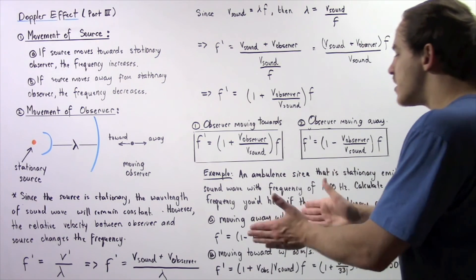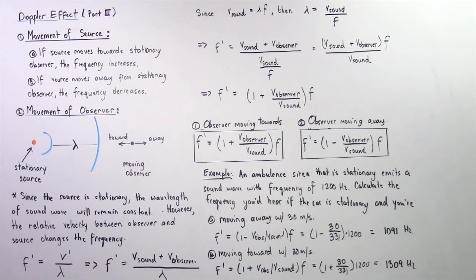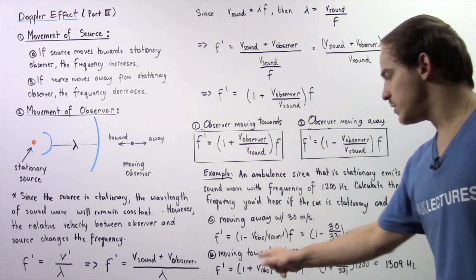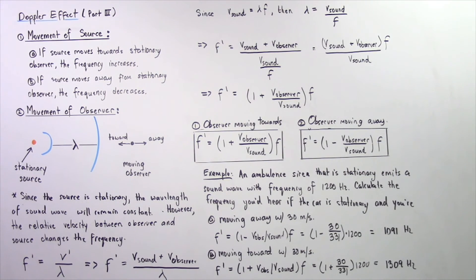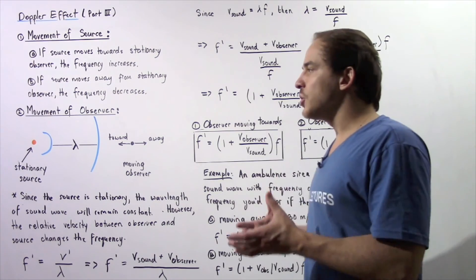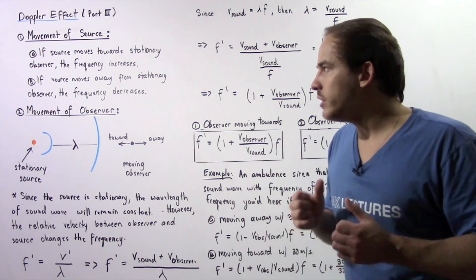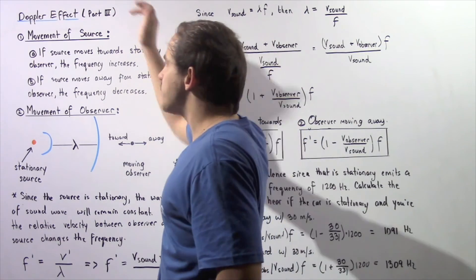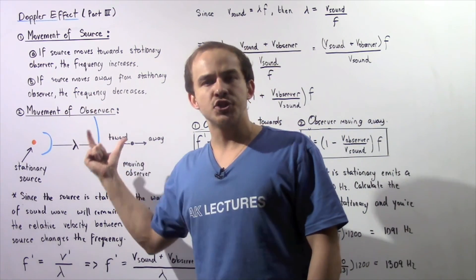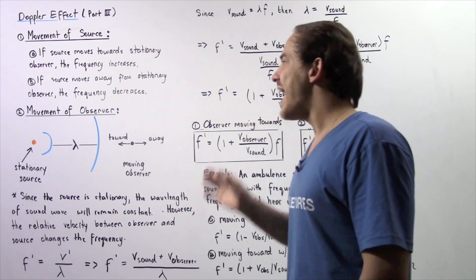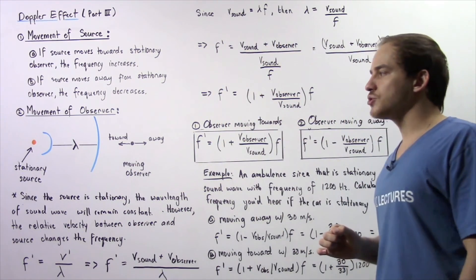That result of 1091 Hz is slightly less than the original frequency. For part (b), using the formula with a positive sign, the new frequency is 1309 Hz. So the Doppler effect is observed not only when the sound source moves but also when the observer moves relative to a stationary sound source.